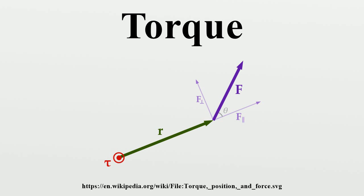The symbol for torque is typically the lowercase Greek letter tau. When it is called moment of force, it is commonly denoted M. The magnitude of torque depends on three quantities: the force applied, the length of the lever arm connecting the axis to the point of force application, and the angle between the force vector and the lever arm.